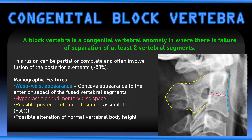Radiographically we're looking for a few characteristic features, including a wasp waist appearance, which is a concave appearance to the anterior aspect of the fused vertebral segments. There's often a hypoplastic or rudimentary intervertebral disc. There can be posterior element fusion, and sometimes there's a possible alteration of the normal vertebral body height — they can either appear shorter or taller depending upon their location.